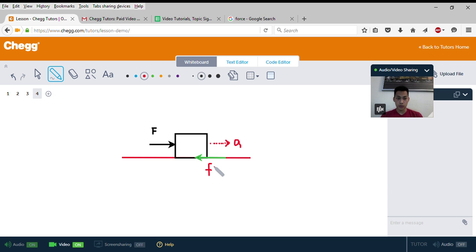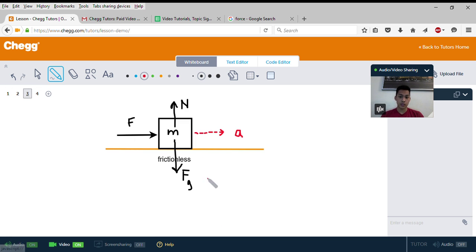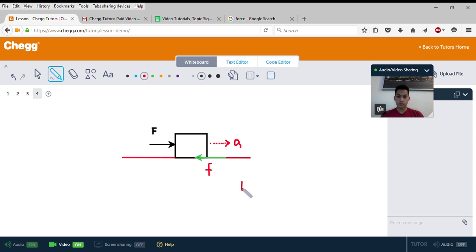This force of friction always opposes the motion of the box, which means this box would not accelerate as fast as a box on a frictionless surface because it has friction holding it back. If the force F is greater than the force of friction, this box will accelerate to the right.